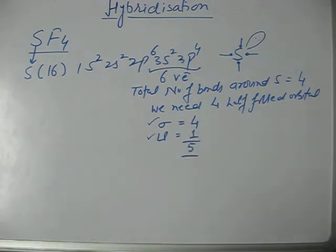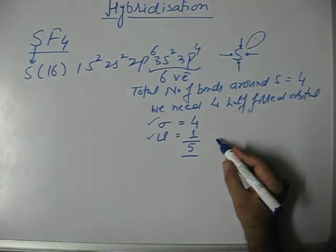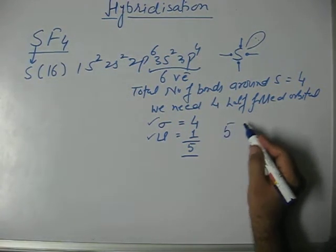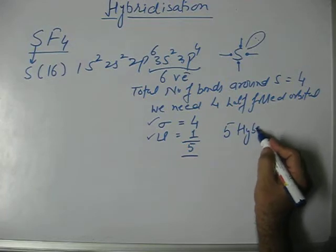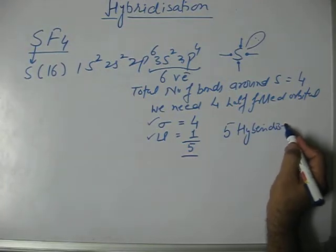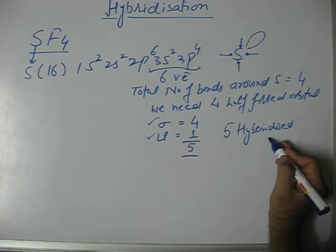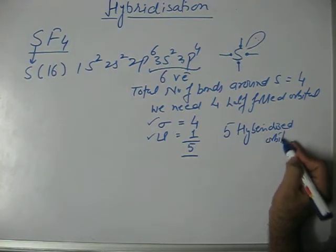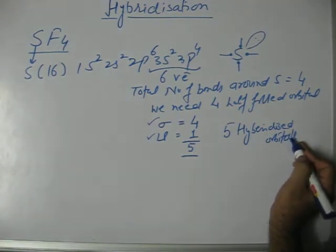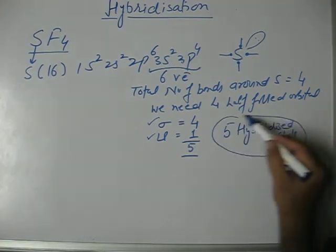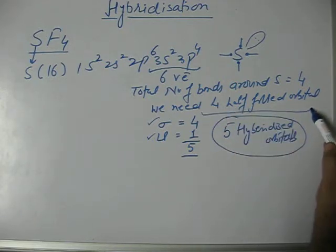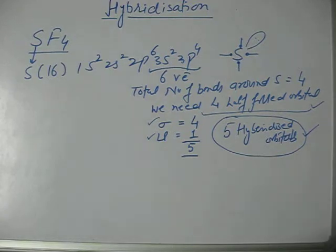That means we need five hybridized orbitals around sulfur. We should always keep this in mind: how many half-filled orbitals do we need and then how many hybridized orbitals do we need around the central atom.